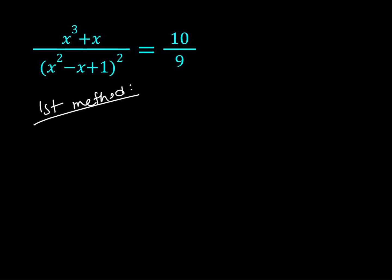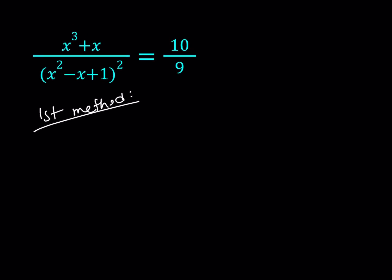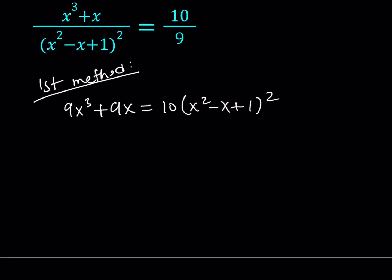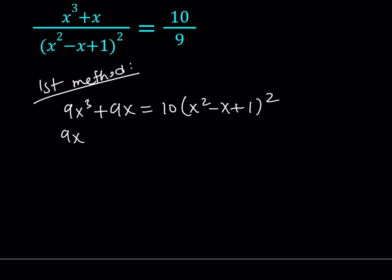My first method is going to involve a little bit of brute force, so I'm going to use cross multiplication, that's going to give me 9x cubed plus 9x equals 10 times the quantity x squared minus x plus 1 squared. Let's go ahead and expand the right hand side and put everything together.